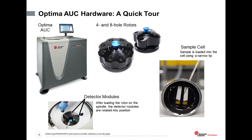We are done with the introductory part and now move to the operational aspect of analytical ultracentrifugation. This is a quick tour of the AUC hardware. The Optima AUC comes with two types of rotors: a 4-hole rotor spinning up to 60,000 RPM and an 8-hole rotor going up to 50,000 RPM. Depending on whether your system requires high throughput or higher speeds, you choose the rotor accordingly.